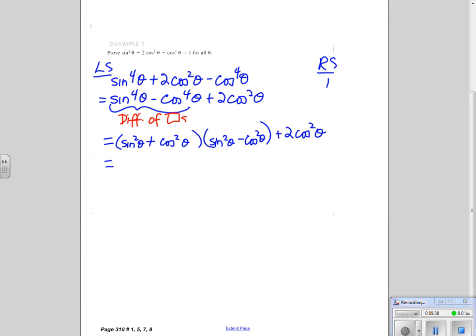Sine squared theta plus cos squared theta, we noticed on the last two slides, is equal to 1. And I have my other bracket, sine squared theta minus cos squared theta, plus 2 cos squared theta. There. I have 1 times that bracket, which if I do distributive law, really does nothing other than get rid of the bracket. So, sine squared theta minus cos squared theta. I have done the distributive law and that plus 2 cos squared theta again.